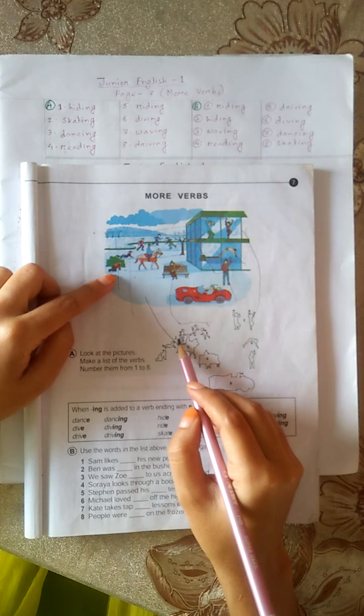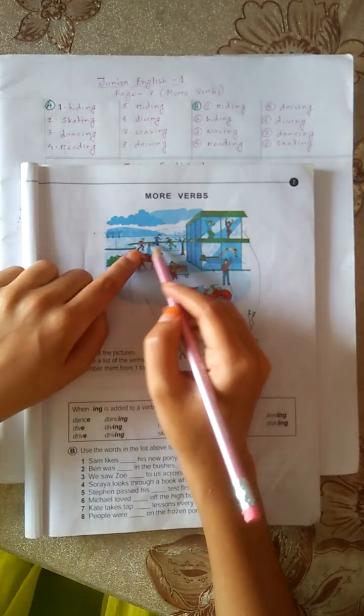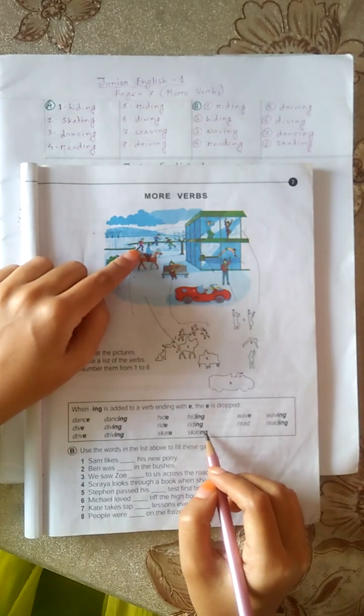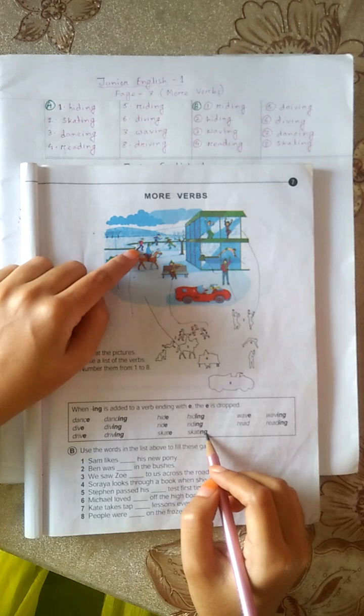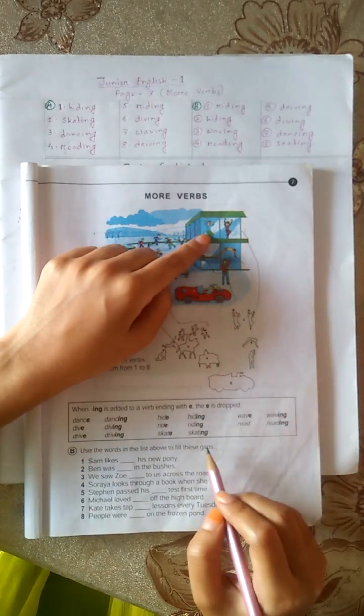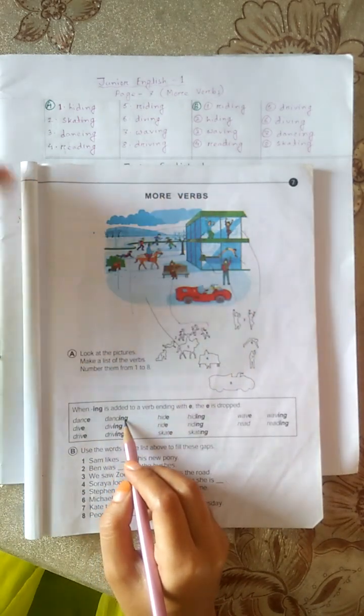Number 2. Skating, S-K-A-T-I-N-G. Number 3, they are dancing. D-A-N-C-I-N-G, dancing.